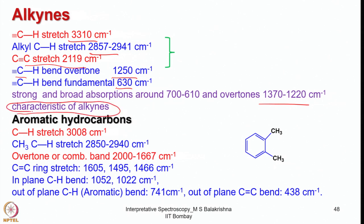Strong and broad absorption around 700 to 610 cm⁻¹ and overtones in the range of 1370 to 1220 cm⁻¹ are characteristic of alkynes. If you have an alkyne group, you should focus your attention on this range.